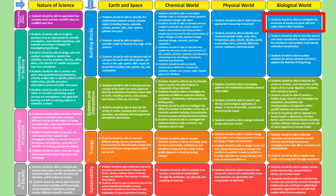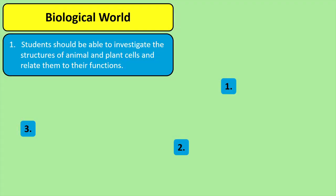The NCCA learning outcomes for junior cycle science state that students should be able to investigate the structures of animal and plant cells. I break this topic on the microscope down into three concepts that you need to know for your exams, which we'll go through on screen now.